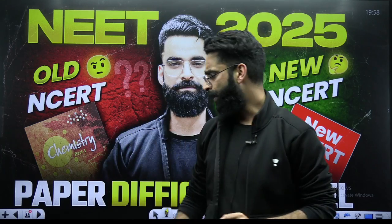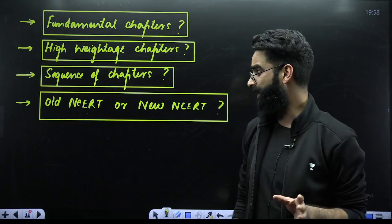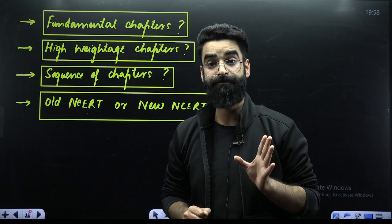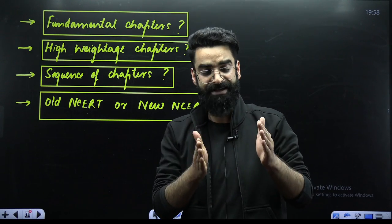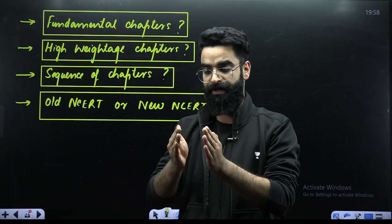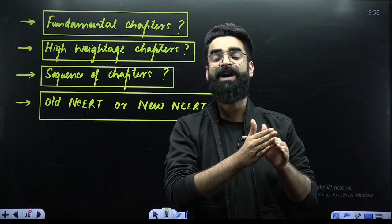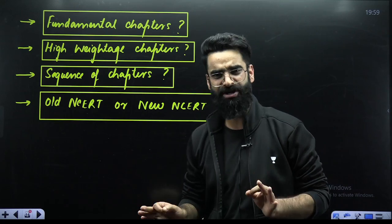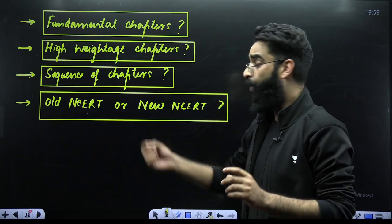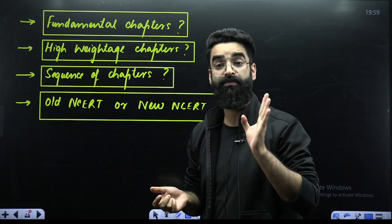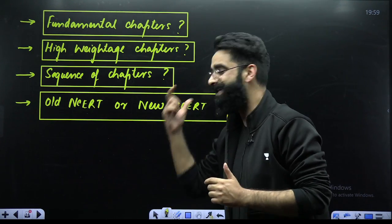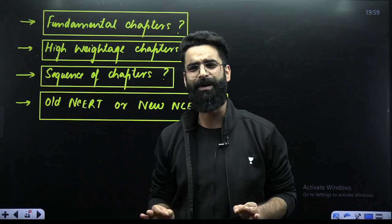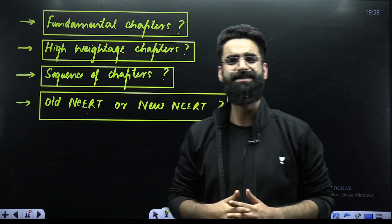There are a few questions which I believe will be in your mind at this point of time. Number one: what are the fundamental chapters which you need to cover first? There are definitely some fundamental chapters in Physical Chemistry, Inorganic Chemistry, and Organic Chemistry — if you skip those, you cannot move ahead. Number two: what are the high-weighted chapters? What should be the sequence of chapters to follow in Physical, Organic, and Inorganic? And which NCERT you are supposed to follow — old or new? Let me address all of them one by one.